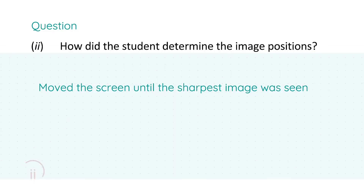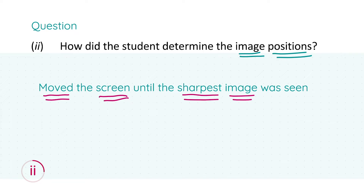Question 2: how did the student determine the image position? We have to move the screen until the sharpest image was seen — this gets you three marks. We want the sharpest image because that gives the most accurate measurement of the image distance; when the image is at its sharpest, the light rays are intersecting exactly at that point to form the image from the mirror.